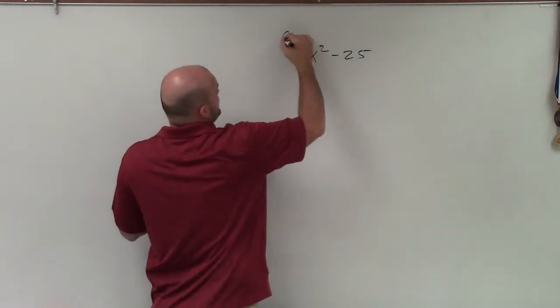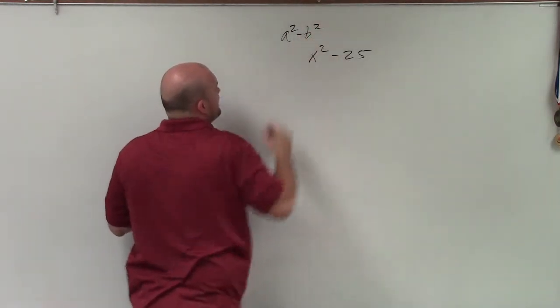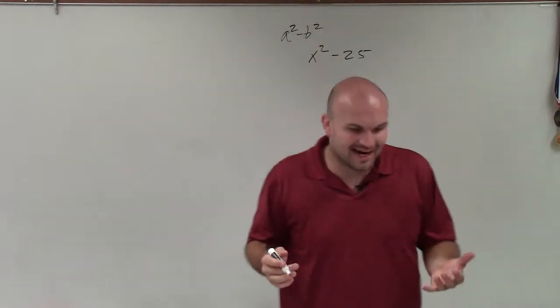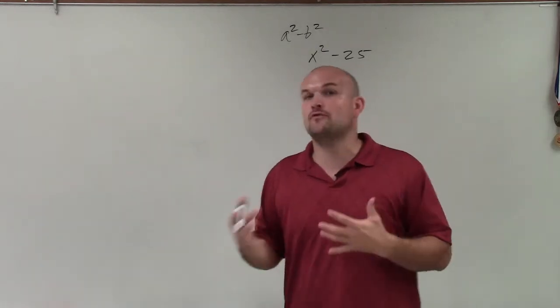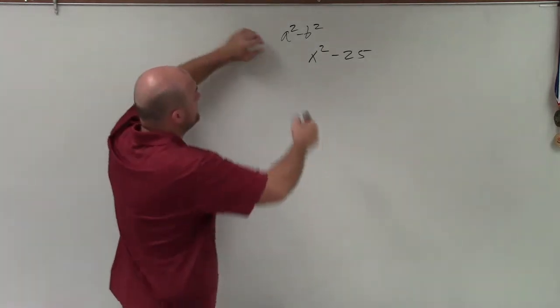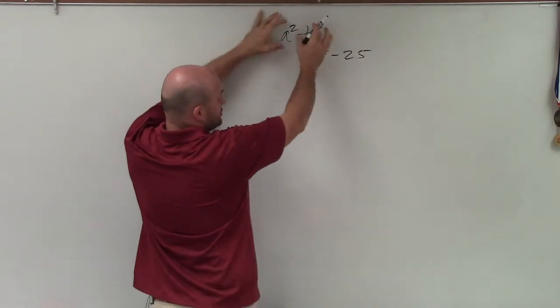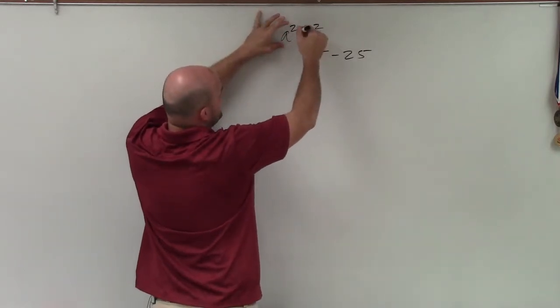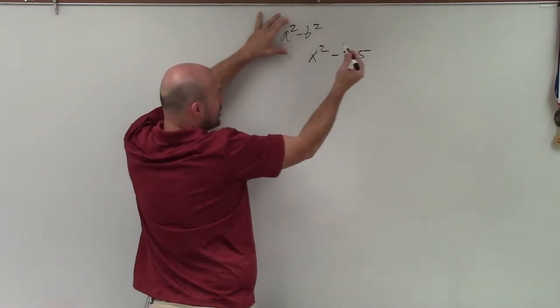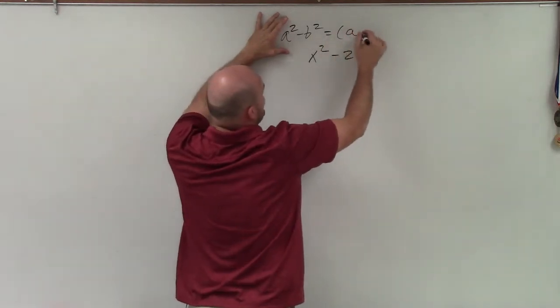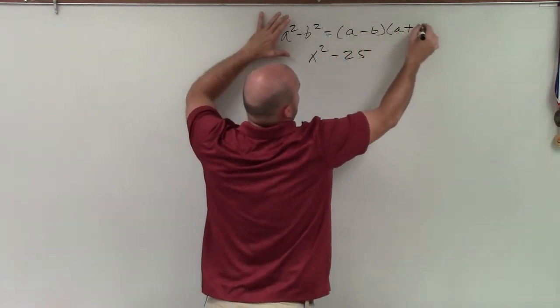When we have the difference of two squares, it's really helpful to know the general form. If we have the square of two variables or even a number, but it's the difference of two square numbers or terms, then that can be factored into (a - b)(a + b).